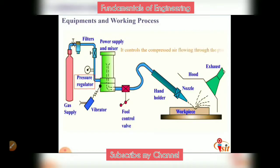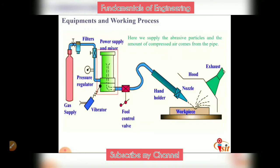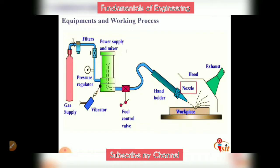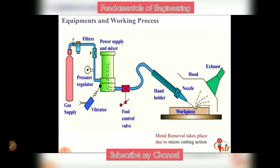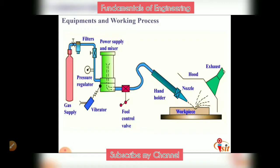At the pressure regulator, we control the compressed air flow through the pipe. The compressed air is then passed to a mixer where abrasive particles are added. The mixed abrasive particles at high pressure pass through the nozzle, which has a small diameter of about 0.18 to 0.8 mm. The high-velocity abrasive jet exits the nozzle and impacts the workpiece, causing material removal through micro cutting action and brittle fracture, producing the desired cavity.